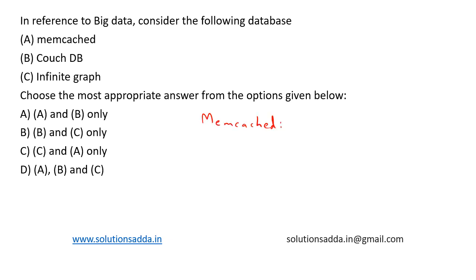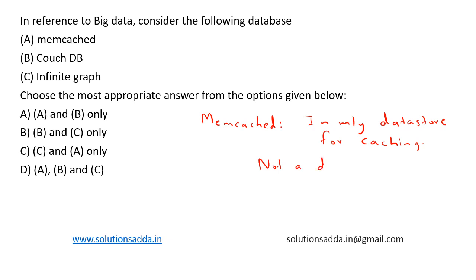What is Memcached? It is an in-memory data store used for caching. It is not a traditional database and is typically used for fast data retrieval and caching frequently accessed data in memory. While it can be part of a big data solution for caching, it is not primarily a database for big data.